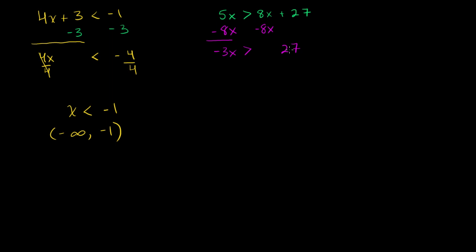So you have negative 3x is greater than 27. Now to turn this into just x, we want to divide both sides by negative 3. But remember, when you multiply or divide both sides of an inequality by a negative number, you swap the inequality. So if we divide both sides by negative 3, we have to swap the inequality — it will go from a greater than sign to a less than sign.